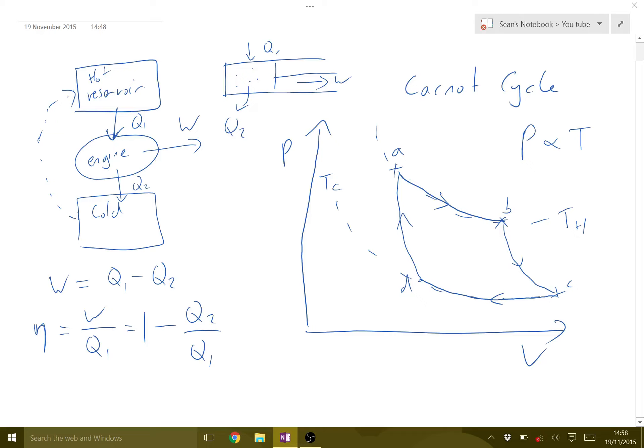So from A to B, that's where our Q1 is coming in to the system. And from C to D, our Q2 is leaving. And then our work done is happening as we expand from A to C. You can see the volume's increasing. You can imagine this piston, the volume's increasing, and that's a force over a distance, so we're doing work. So from A to C, that's where our W, our work done, is happening.